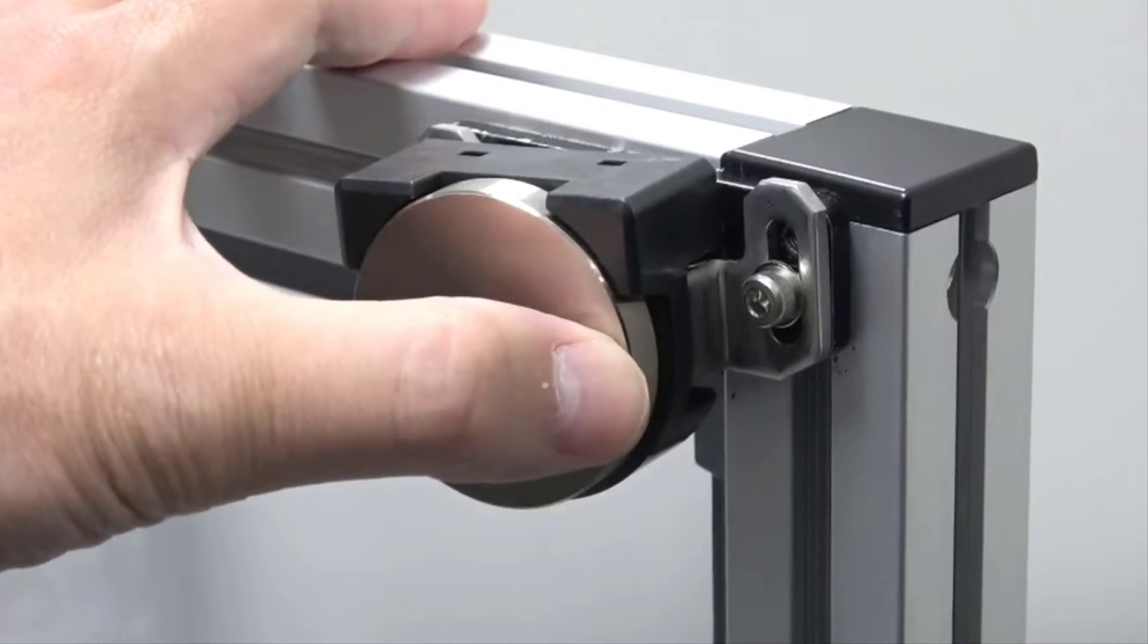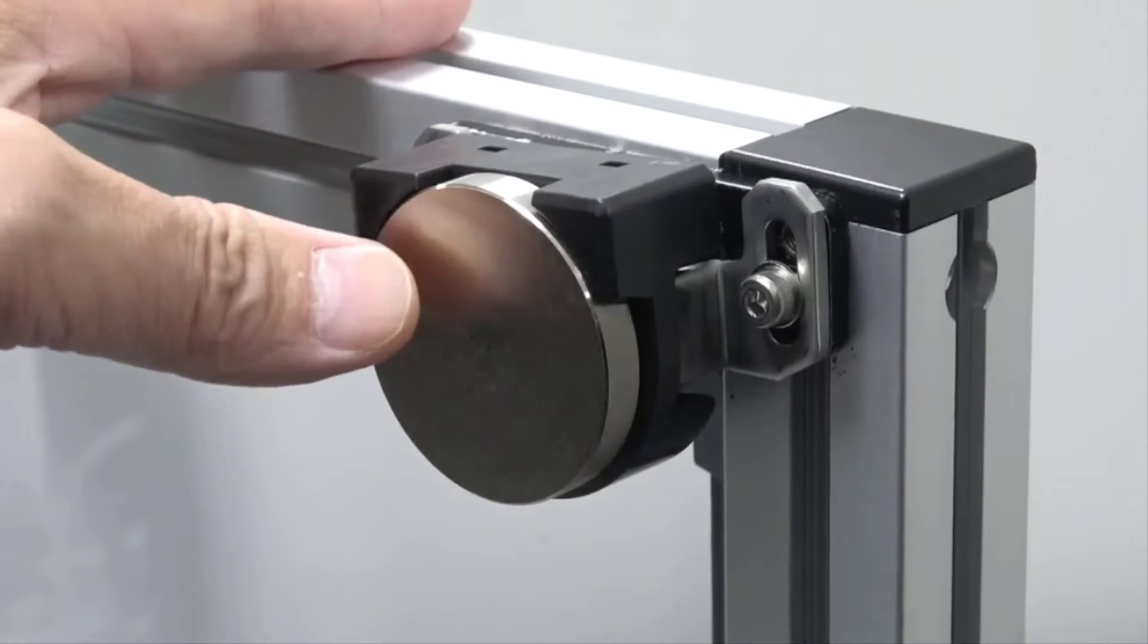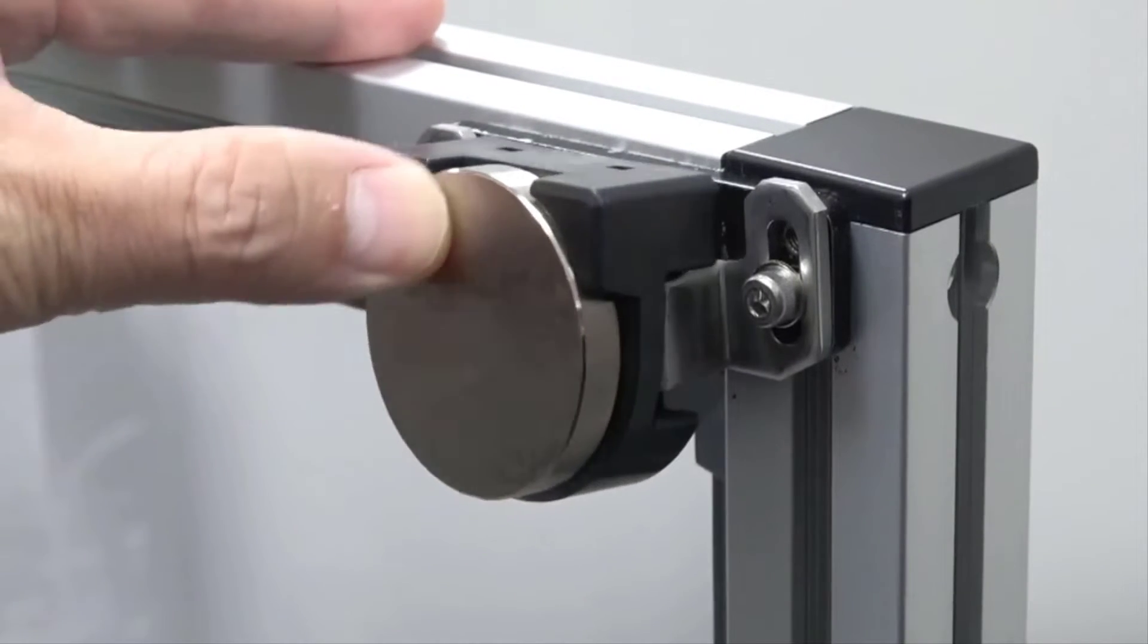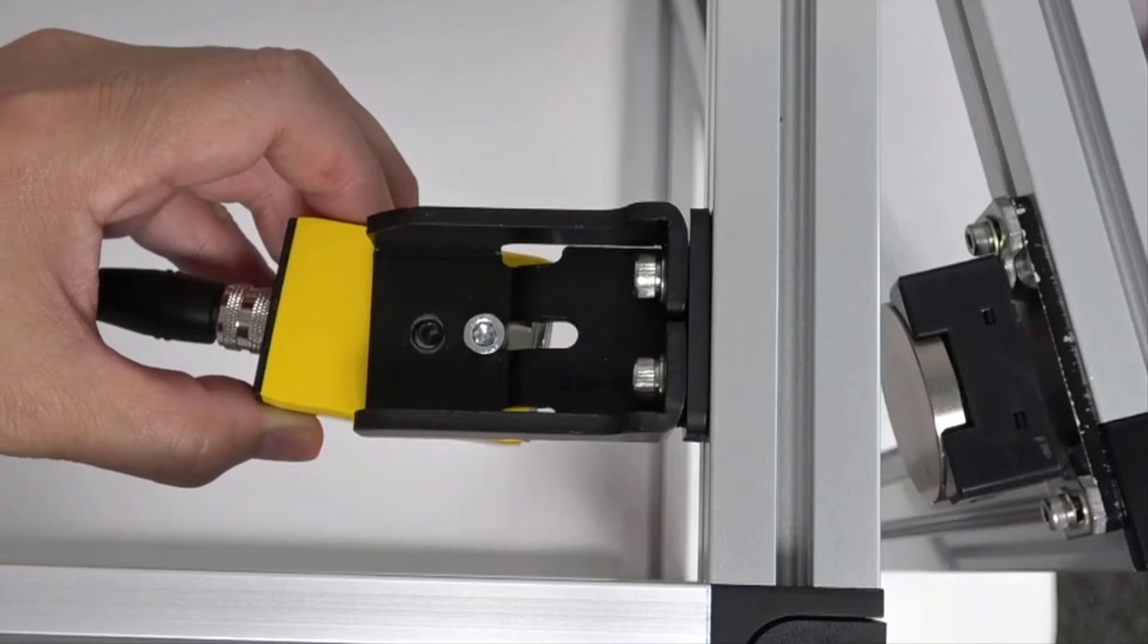Moreover, the actuator is designed to tilt back and forth, which helps out when doors tend to sag over time or if the door just has a tight turning radius.